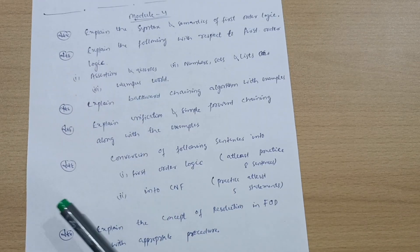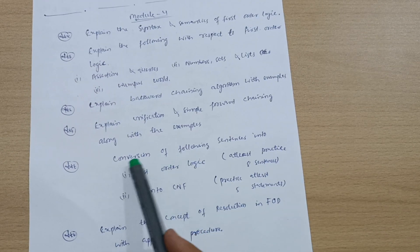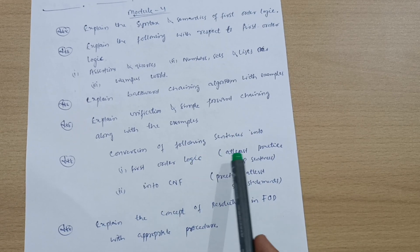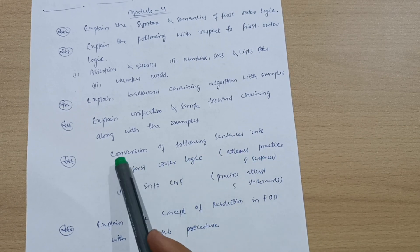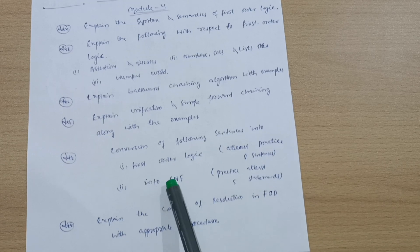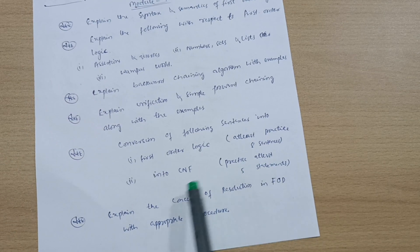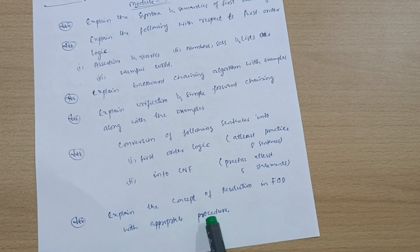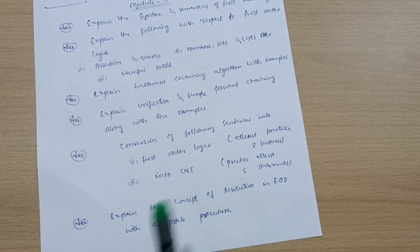Go through some problematic parts: conversion of following sentences into first-order logic—at least you should try eight sentences. And conversion of following sentences into CNF—practice at least five statements. Explain the concept of resolution in FOL with appropriate procedure.